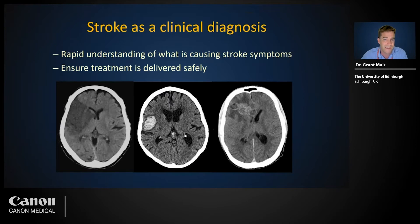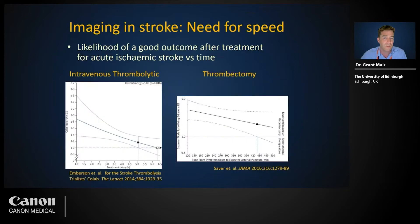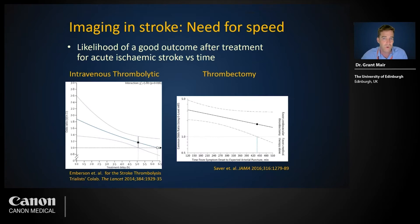Brain imaging needs to be available immediately, performed and interpreted rapidly, so that appropriate treatment can be determined — in other words, to identify patients eligible for thrombolysis and/or thrombectomy. Urgent brain imaging is required for all patients who present with symptoms of stroke. Time is brain: according to Jeff Saver, for every minute of an ischemic stroke, 2 million neurons, 14 billion synapses, and 12 kilometers of myelinated fibers are destroyed.